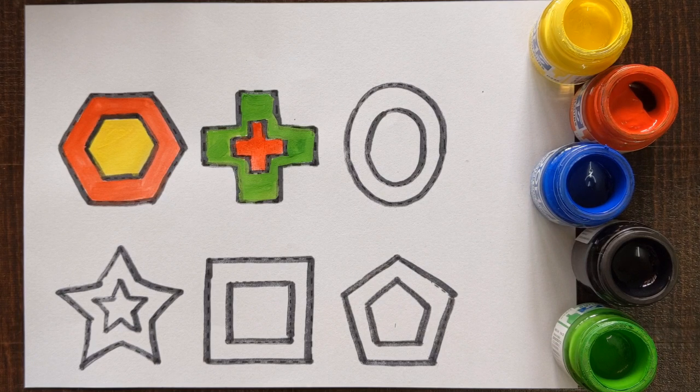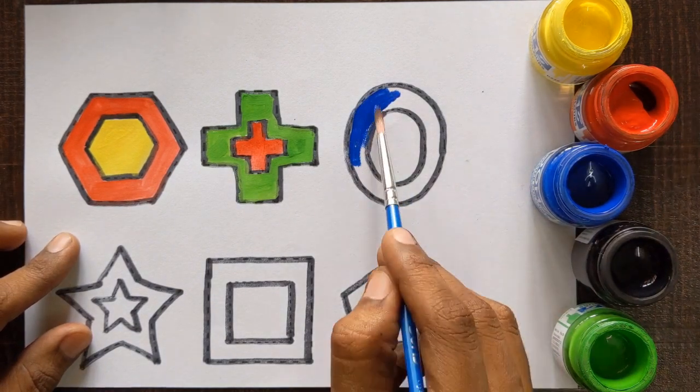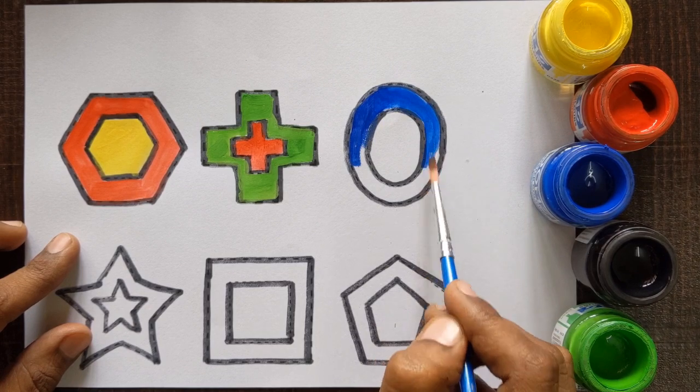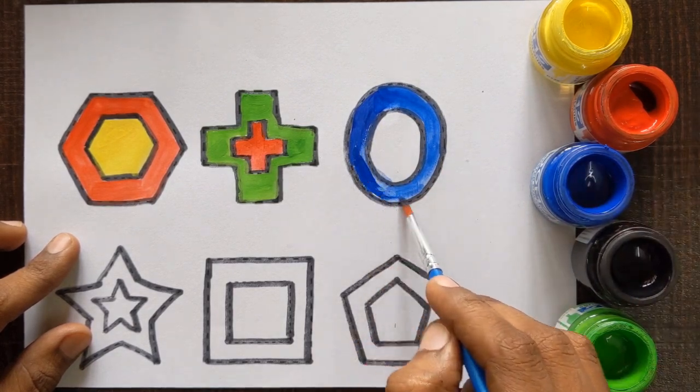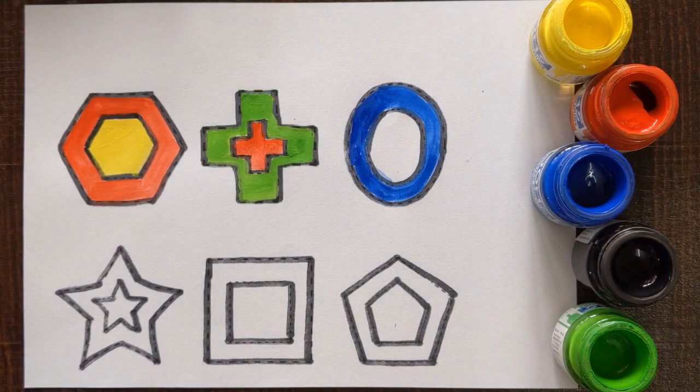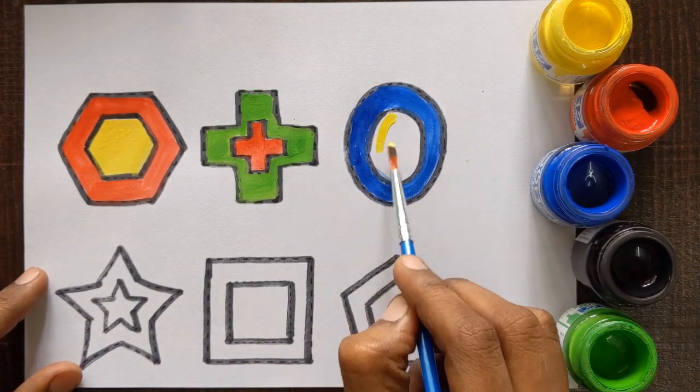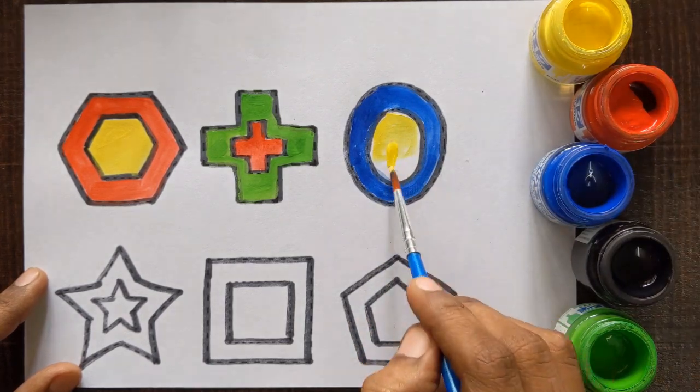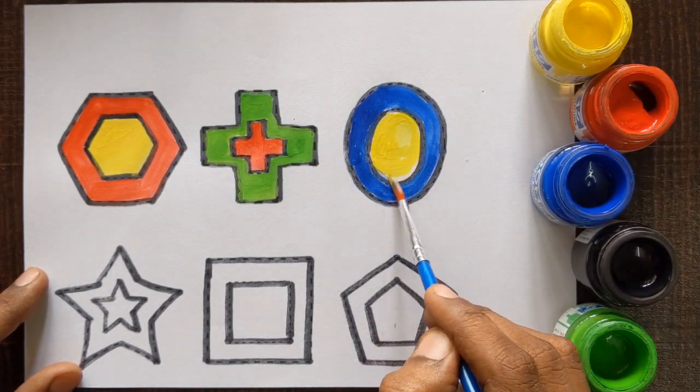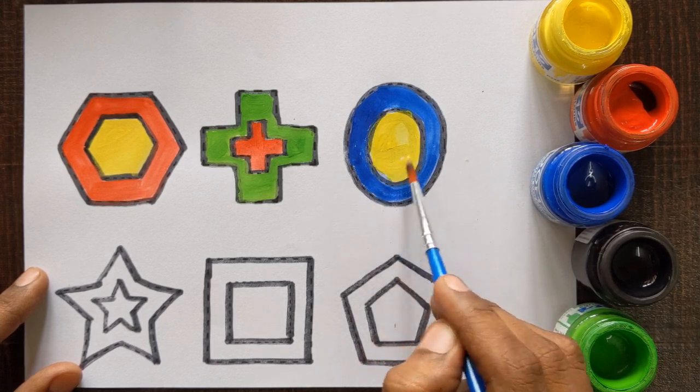Big oval, blue color. And small oval, yellow color. Next shape is star.